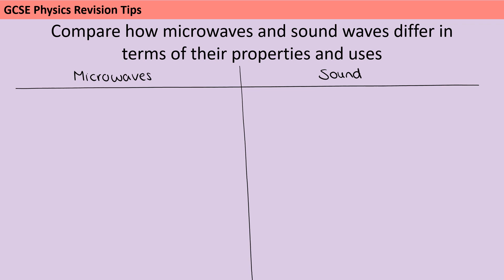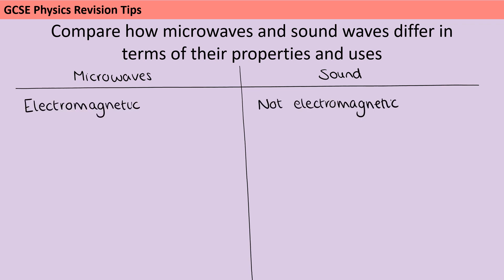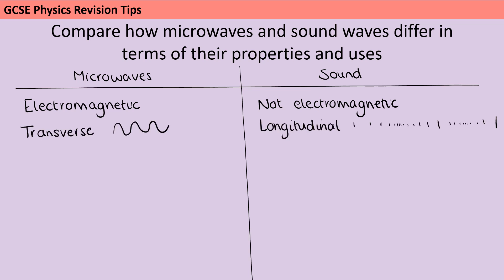The first thing I would identify is that microwaves are part of the electromagnetic spectrum whereas sound waves are not electromagnetic. Then I'd discuss the type of wave — so microwaves, being part of the EM spectrum, are transverse waves, whereas sound waves are longitudinal.